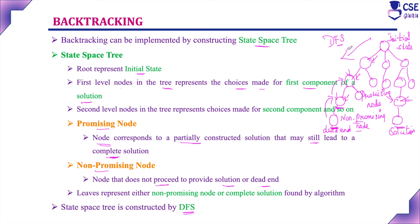In backtracking, if the algorithm reaches a complete solution to the problem, it either stops or continues searching for other possible solutions. More than one solution is possible in backtracking — it will consider all possible feasible solutions. Not only one solution is possible; more than one solution can be found. This is the backtracking technique.